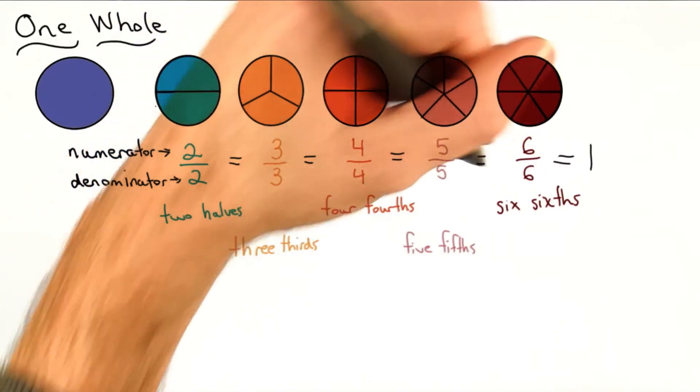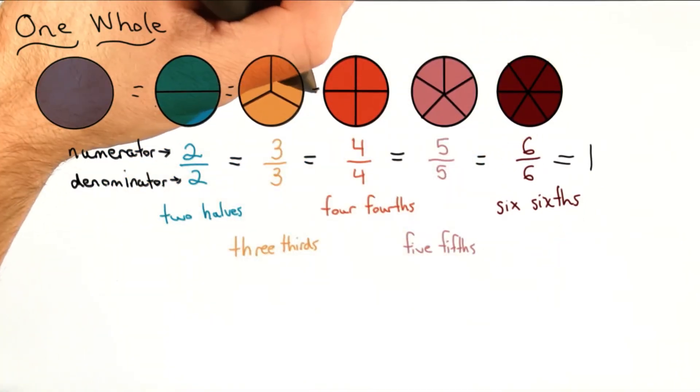I know all these circles really represent 1. They're all equal. They represent 1 whole circle.